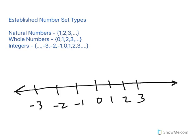And then we have whole numbers, which would be zero, one, two, three, and so on.